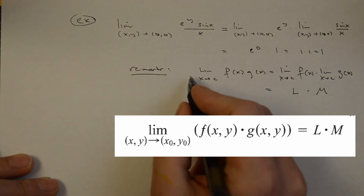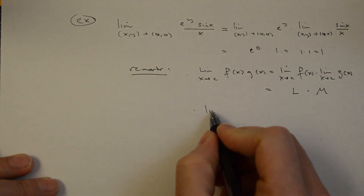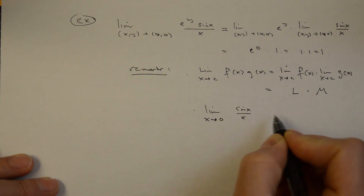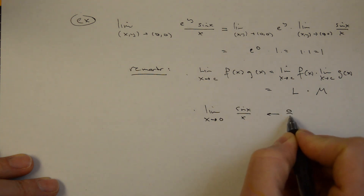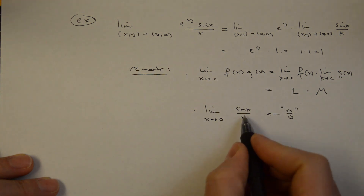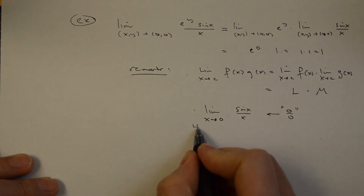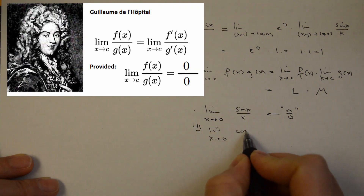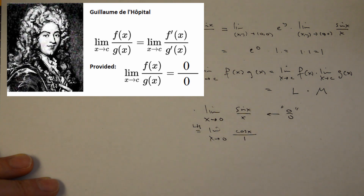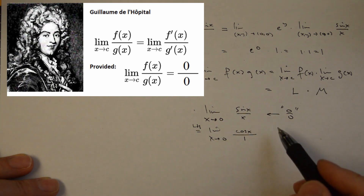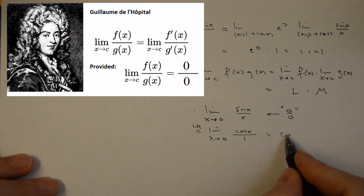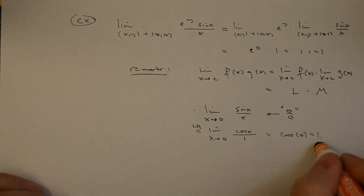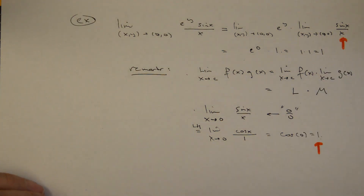The second remark is that sin(x)/x is a standard limit. The limit as x approaches 0 of sin(x)/x, which is 0 over 0, can be simplified using L'Hôpital's rule. Taking the derivative of the numerator gives cosine, and the derivative of the denominator is 1, so this becomes cos(0) which equals 1. L'Hôpital's rule allows us to find that answer.